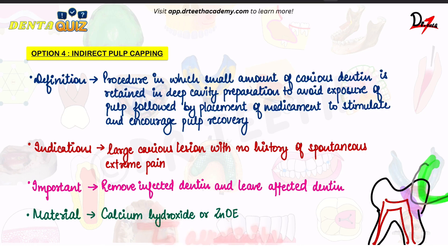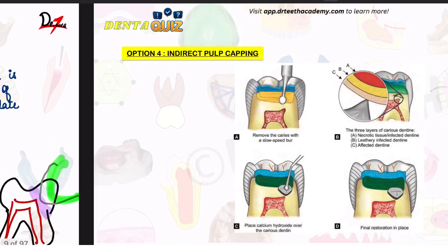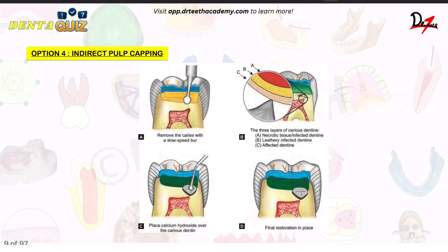Now another important concept to remember: the calcium hydroxide that we place here provides the alkaline environment that is required for reparative dentine to form. However, the calcium ions needed for this dentine to form actually come from blood, and not from the calcium hydroxide. The calcium hydroxide is only responsible for providing the alkaline medium — this point is also important.